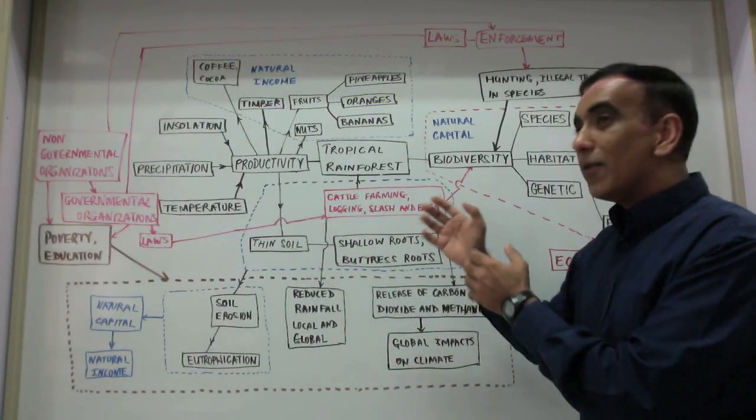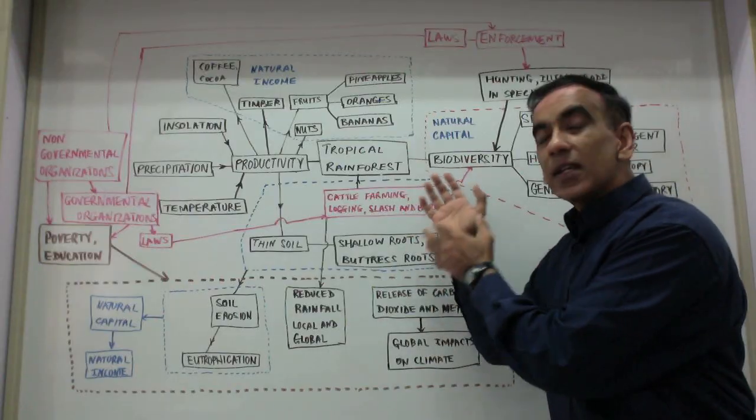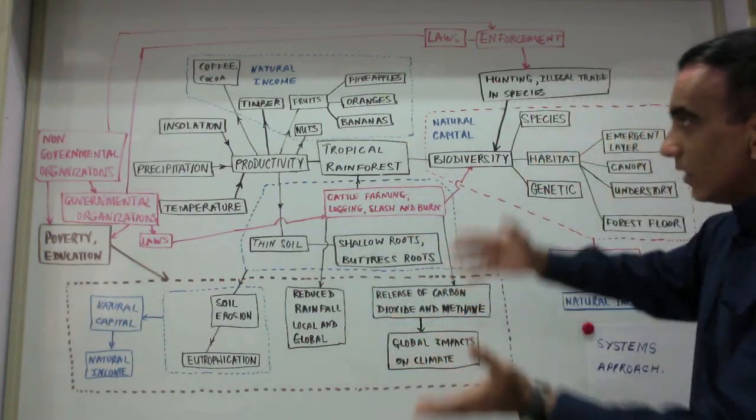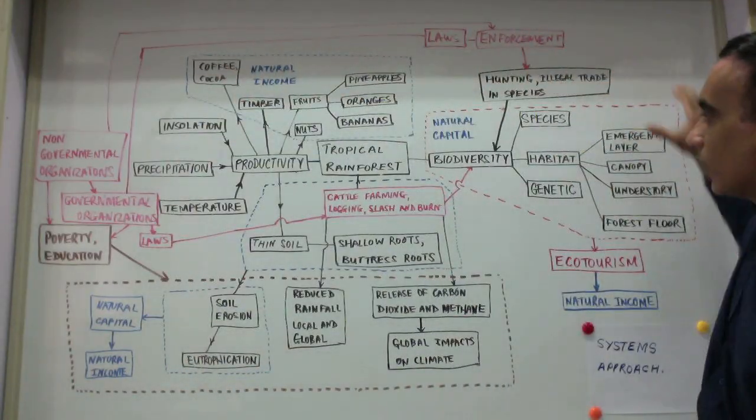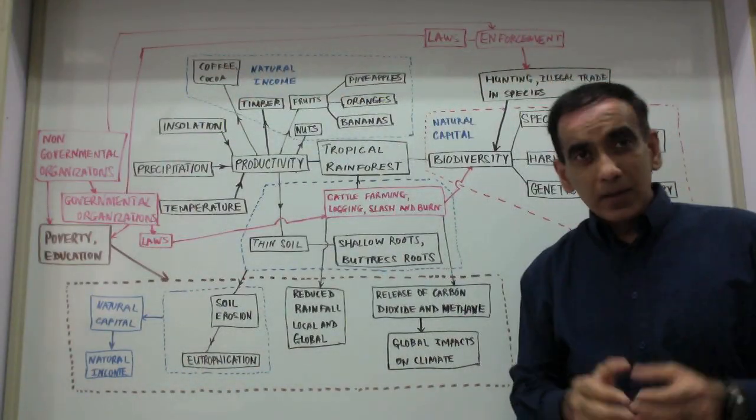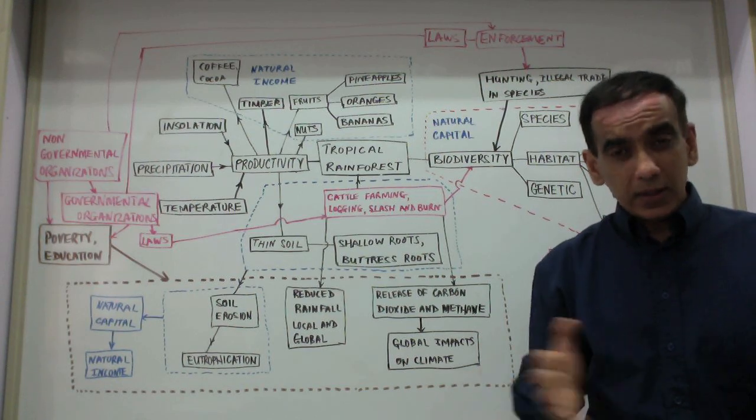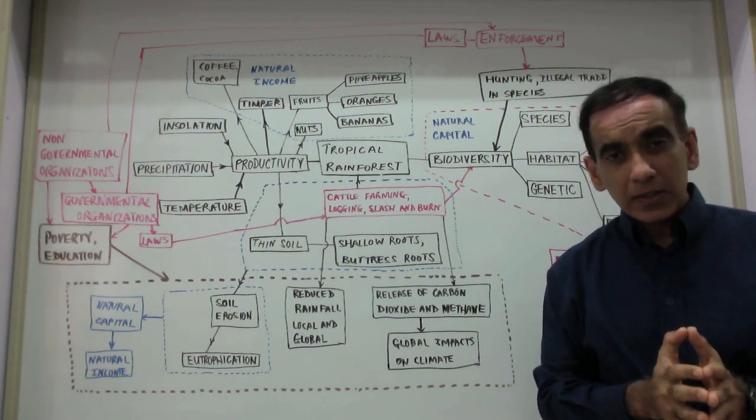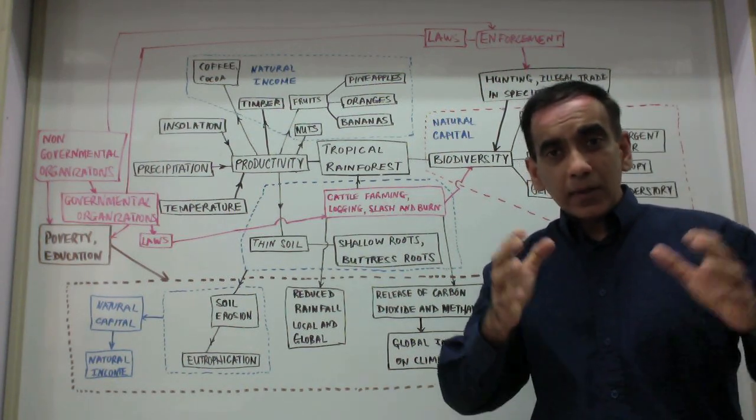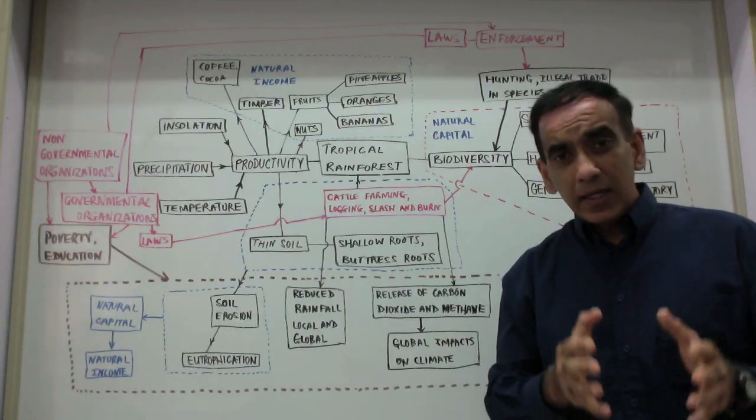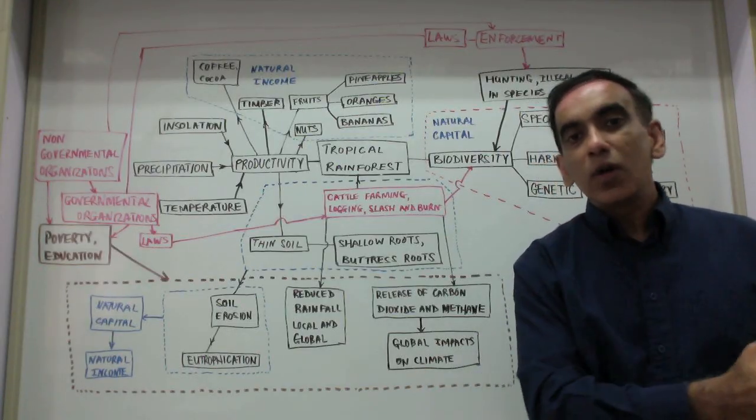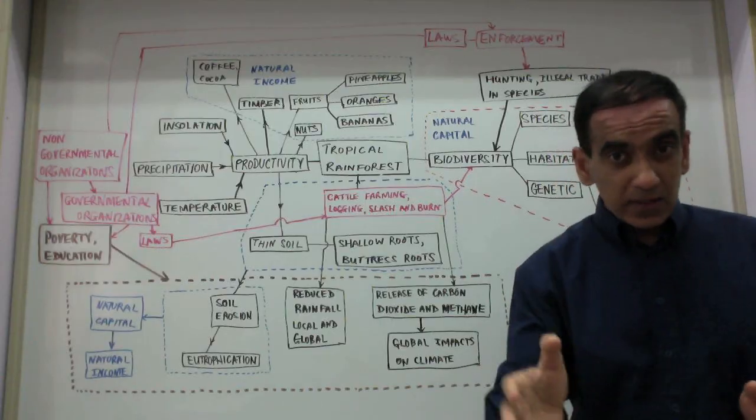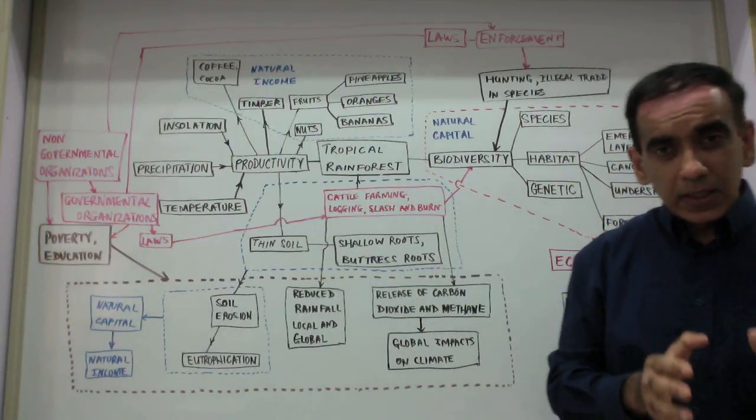Let's look at this very complicated diagram and try to simplify it to understand the holistic nature of environmental systems and societies. And if you're a student approaching the exams and you've studied your seven topics from number one, systems and models, to number seven, environmental value systems, I want you to think about all of those topics and how they can be connected in this one diagram.